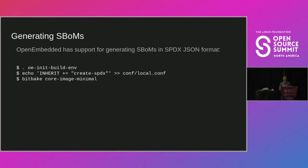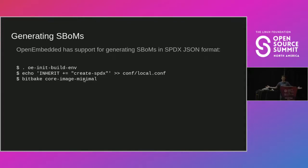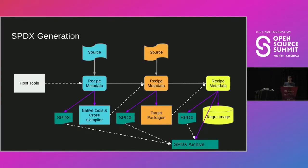Generating SBOMs is very easy. We generate SBOMs in SPDX JSON format — we chose SPDX as the ISO standard and Linux Foundation project, and JSON because our build system is written in Python and JSON with Python is very easy. You initialize your build environment, add a single line 'INHERIT += "create-spdx"' to your local.conf file, and then BitBake your image. It will generate SPDX for everything in that image and all the native tools that helped produce it. At the end, all SPDX documents are collected into a compressed tarball.